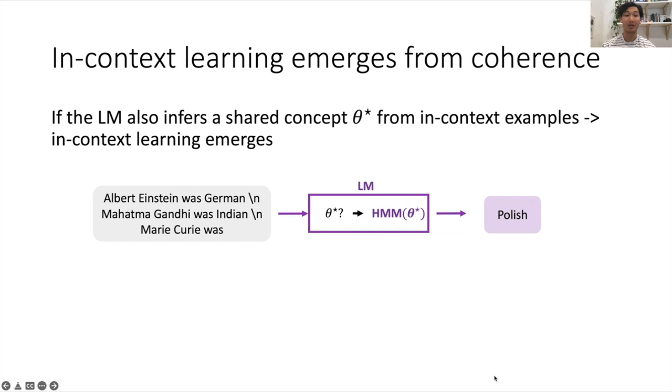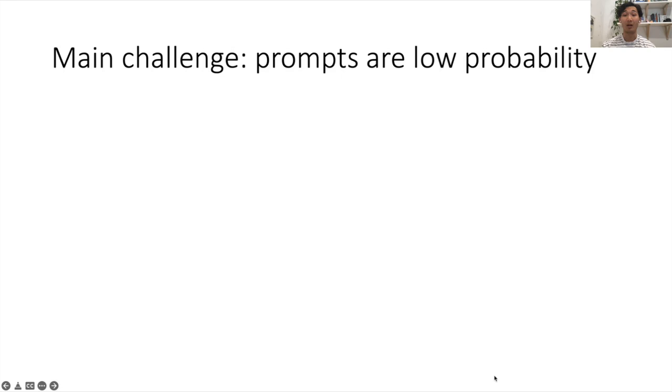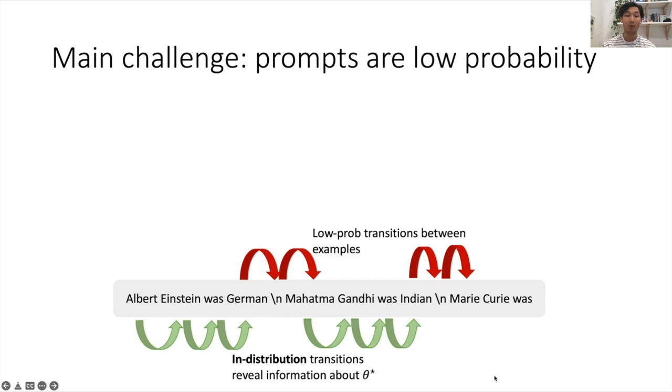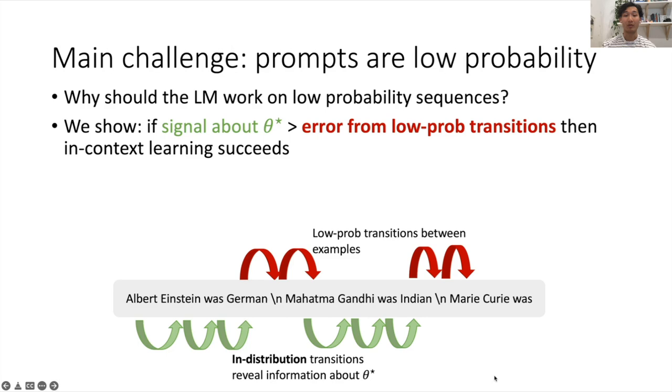Now, the main challenge here is that prompts are low probability sequences. The picture to have is that within each training example, we have in-distribution transitions that reveal information about the task theta star, the task concept theta star. But between independent examples, we have low probability transitions. So why should the language model work on these low probability sequences? We show theoretically that if the signal about theta star is greater than the error from low probability transitions, then in-context learning succeeds.